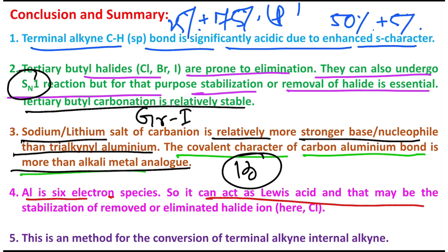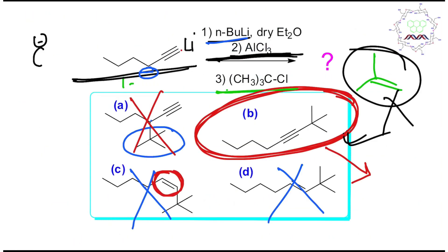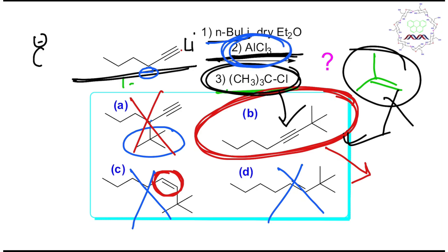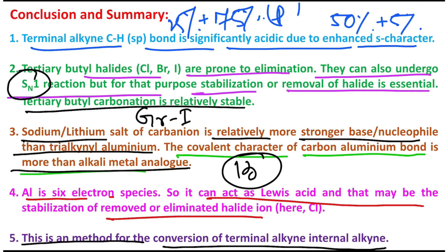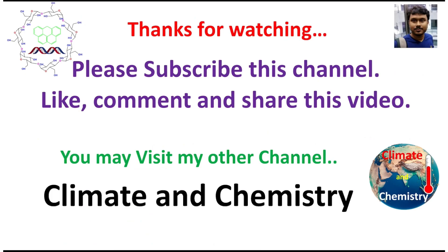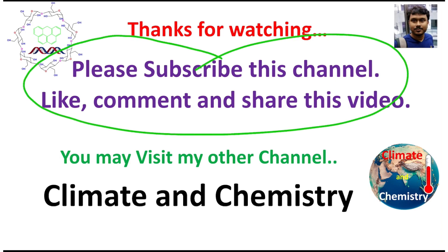This Lewis acid character of aluminium is responsible for removal of the halide — coordination of the halide with the six-electron aluminium center results in stabilization. This is also a method for the conversion of a terminal alkyne into an internal alkyne. Generally, we select a less bulky alkyl halide for this purpose, but this example is exceptional — a more bulky tertiary halide can also react via the alkyl aluminium intermediate. I believe this video was useful. If you consider my channel's content worthy, please help the channel grow and write your opinion in the comment box. Thanks.